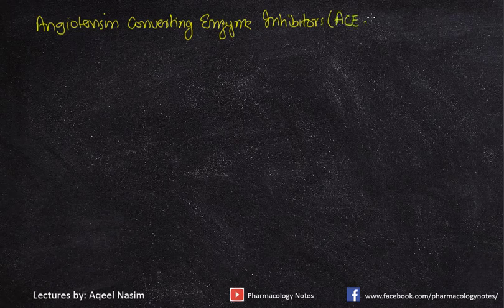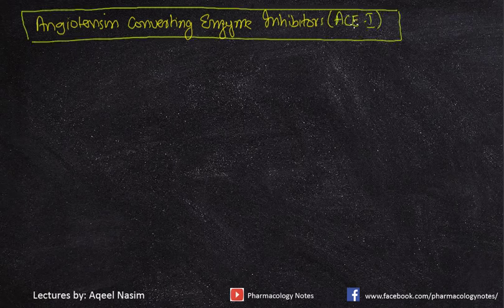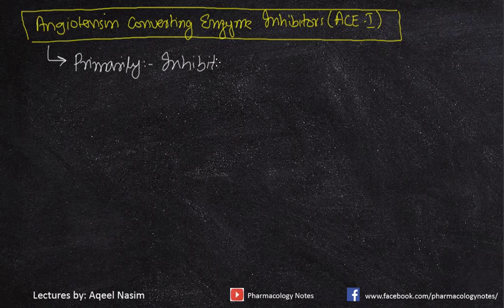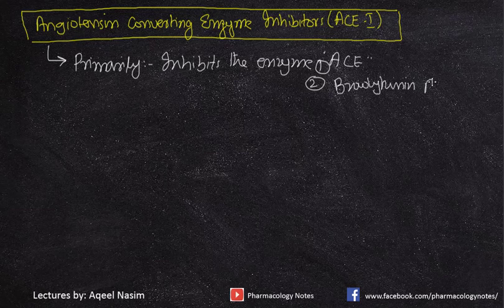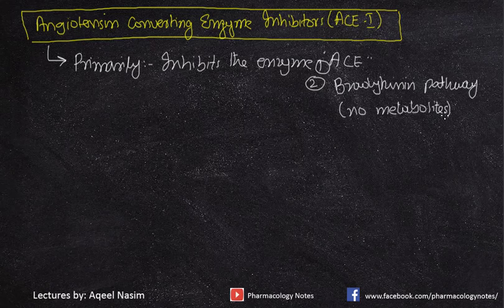Now, when angiotensin converting enzyme inhibitors are administered, this drug class works by two mechanisms as discussed. It primarily inhibits the enzyme ACE, causing blockage via two pathways: the first is the renin-angiotensin pathway, and the second is the bradykinin pathway. With ACE inhibitors given, there will be no metabolism of bradykinin.